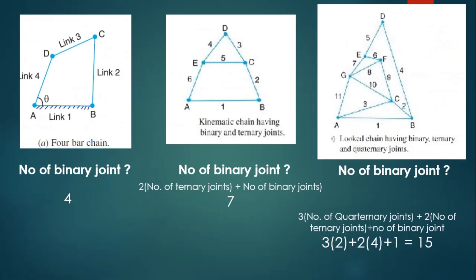Now let us discuss a problem. This is a four-bar chain with four links: link one, link two, link three, and link four. We need to find the number of binary joints. Ternary equals zero, quaternary equals zero. Binary equals four: link one and link four form the first binary, link four and link three form the second, link three and link two at point C form the third, and point B forms the fourth. So totally four binary joints are there.